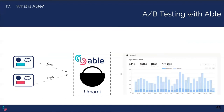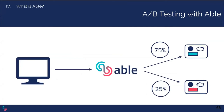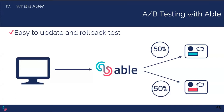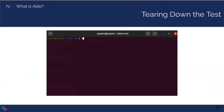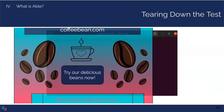As users interact with CoffeeBean.com, information about their behavior is channeled to Umami, where the team can view it in real time. As the test progresses, the Coffee Bean team can make adjustments — incrementing traffic to a well-performing variant, or fine-tuning a winner by testing a different feature change. They can simply edit the config file at any time and run ABLE Update to modify the test in progress. When the test is done, ABLE Destroy Test will roll back the test and ABLE Destroy Umami will tear down all the AWS infrastructure, and the team can release their fully optimized site.